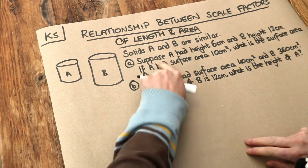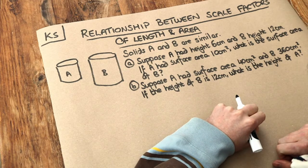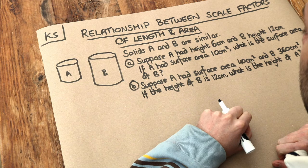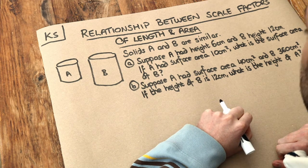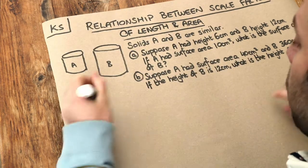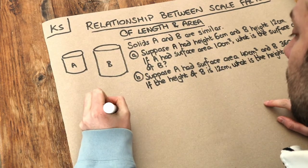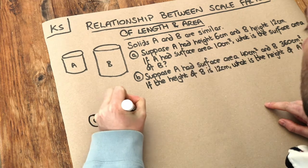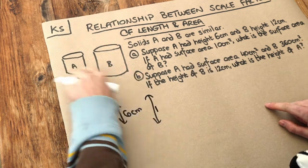So let's look at this problem. Suppose A had height 6 centimeters and B height 12 centimeters. If A had a surface area of 10 centimeters squared, what is the surface area of B? Well, we've got the two heights: the height of A is 6 centimeters and the height of B is 12 centimeters for these two solids.